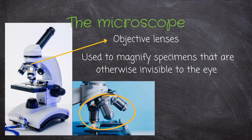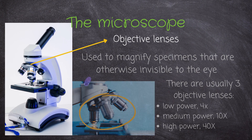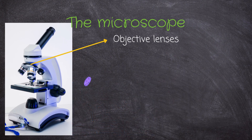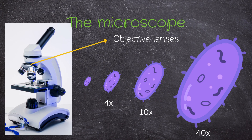Speaking of the objective lenses — these are used to magnify the specimen that are otherwise invisible to the naked eye. There are typically three types: the low power objective lens, the medium power objective lens, and the high power objective lens. This illustration is not to scale, but shows how an object is enlarged based on the objective lens chosen.